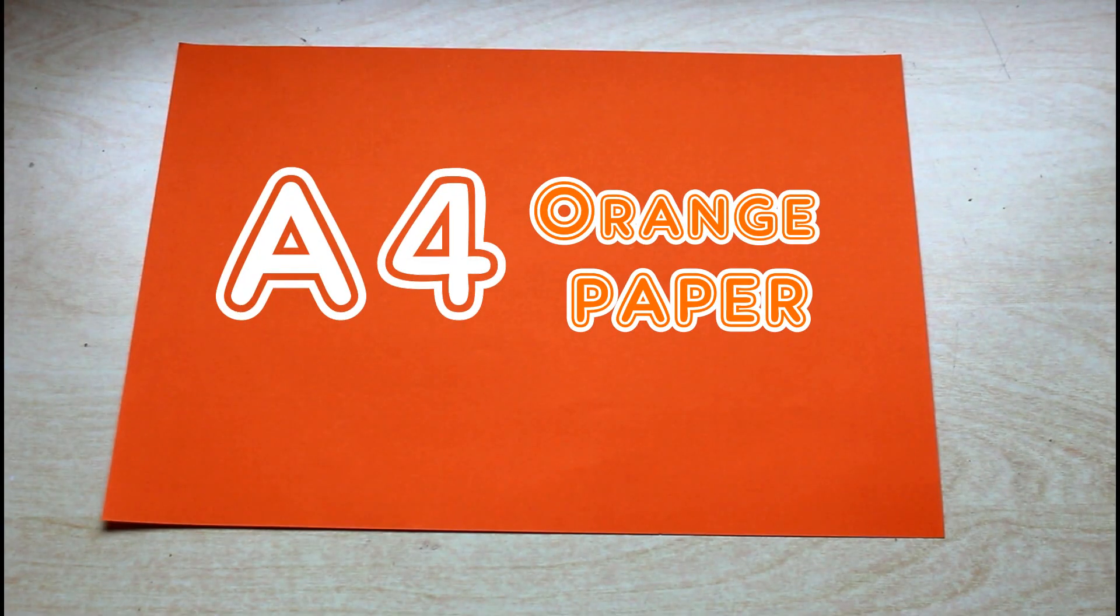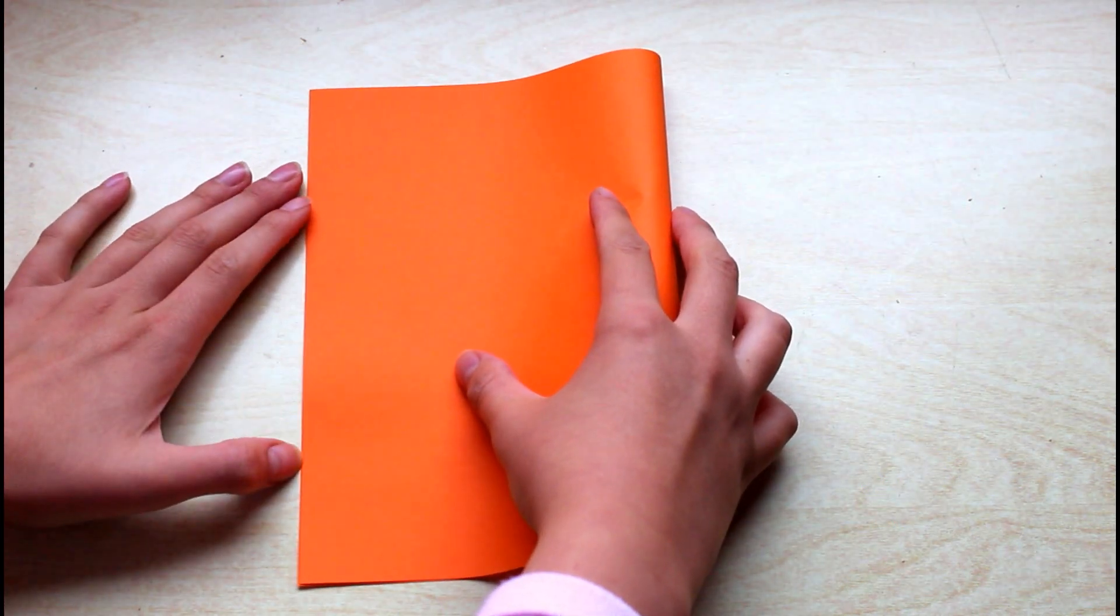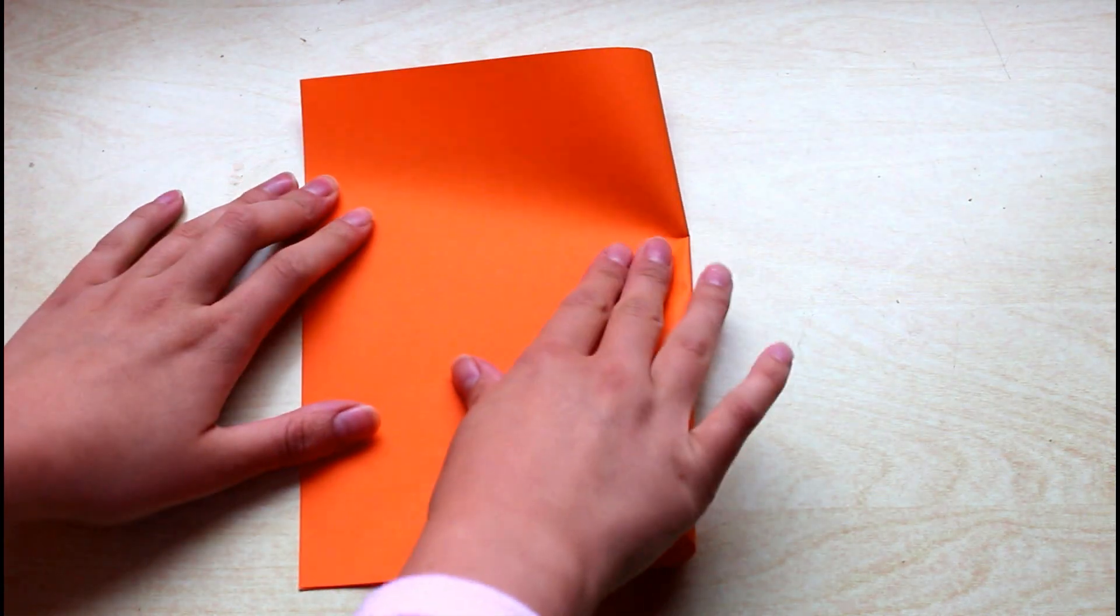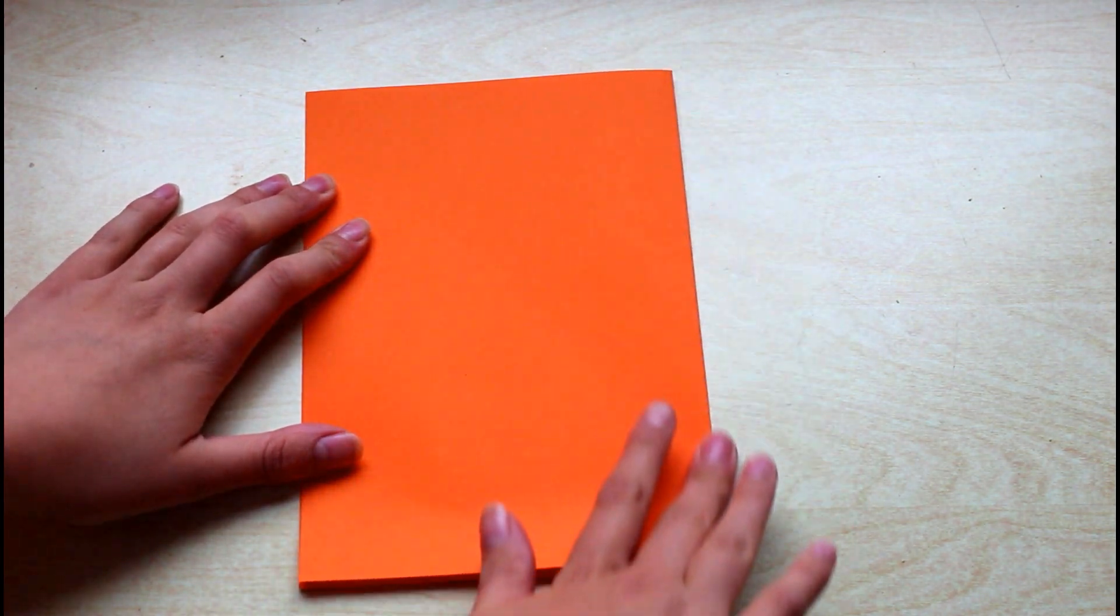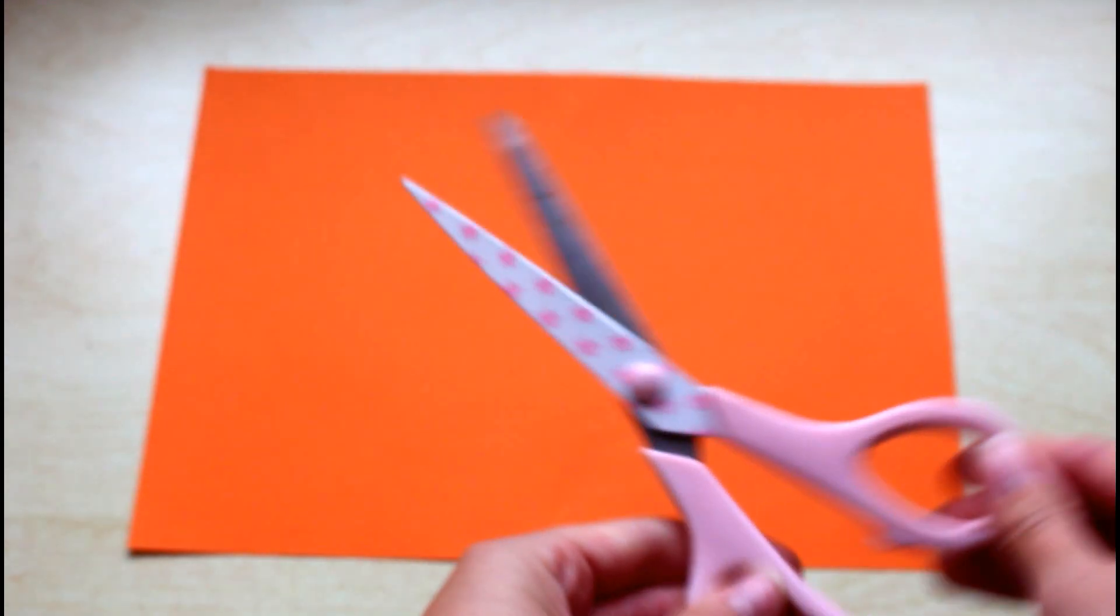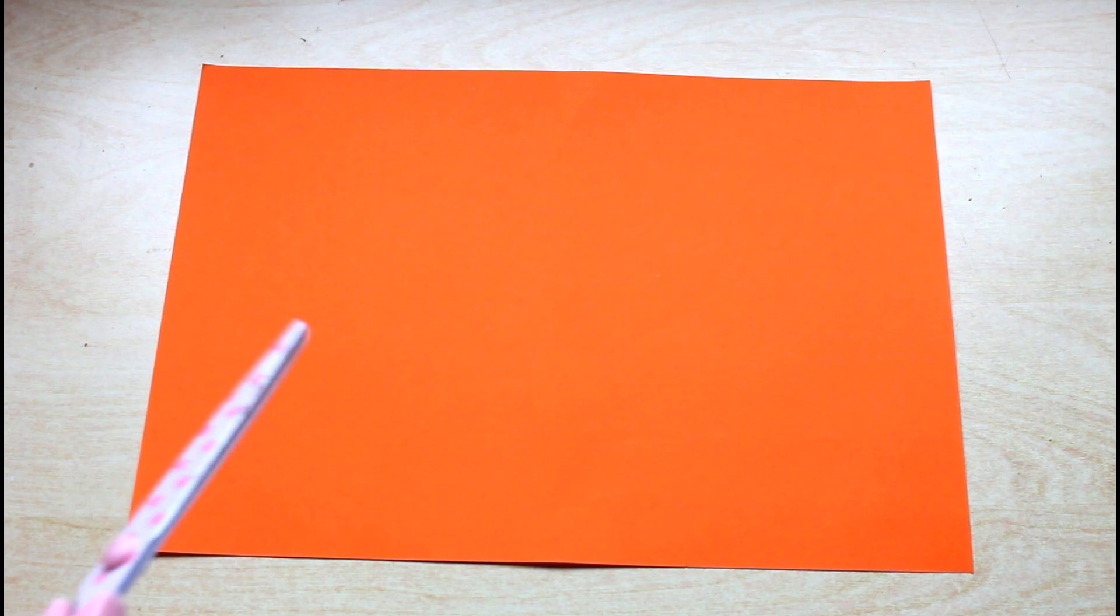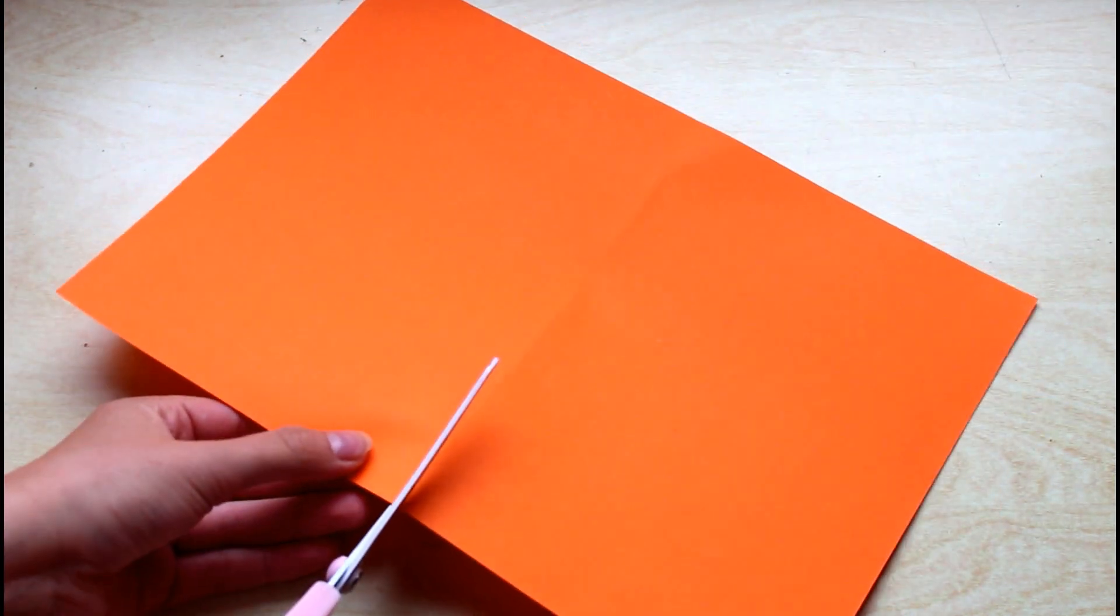The first thing I'm going to do is take a sheet of A4 orange paper and then fold this in half and cut it in half with my nice pink scissors. Now if you've seen any of my other videos, you will be very familiar with all of these steps coming up, but if you haven't, this is how to make a very basic corner bookmark.